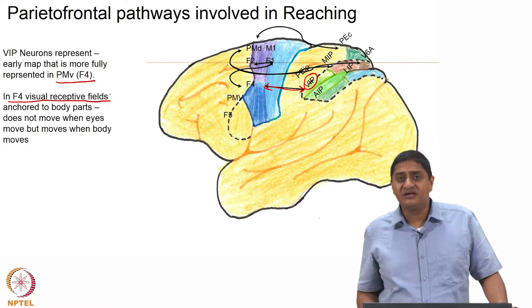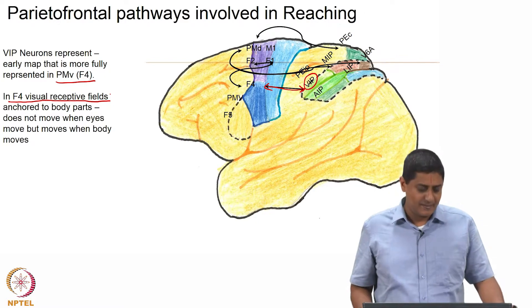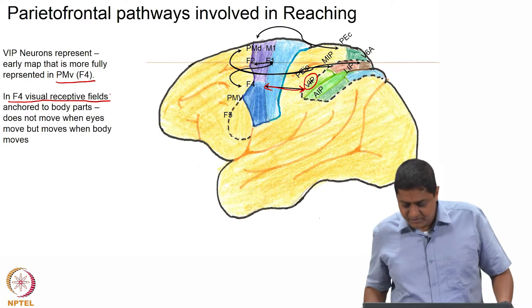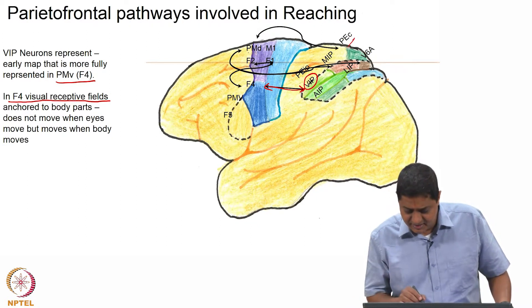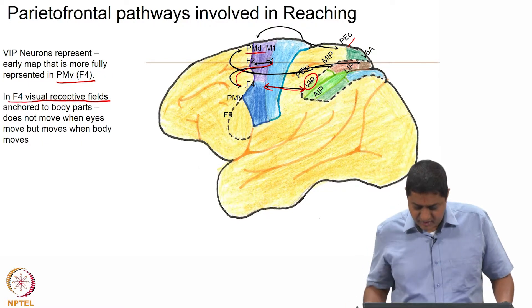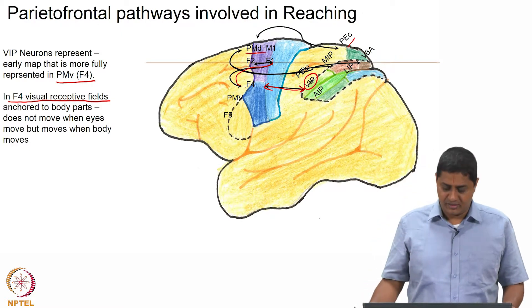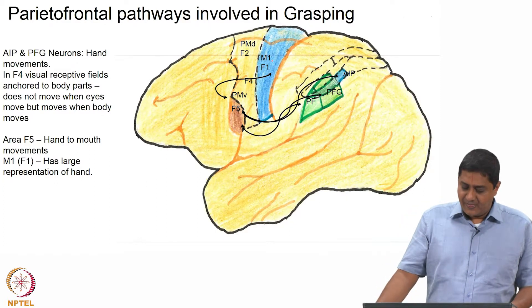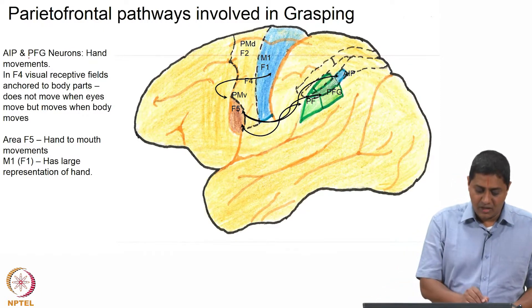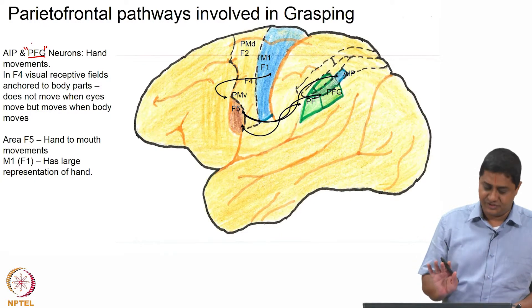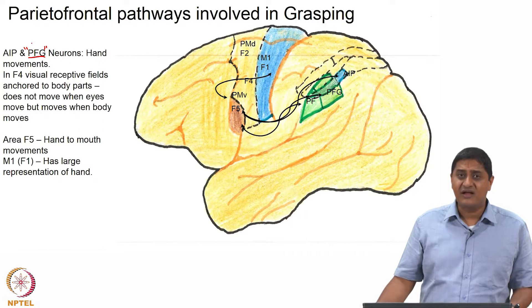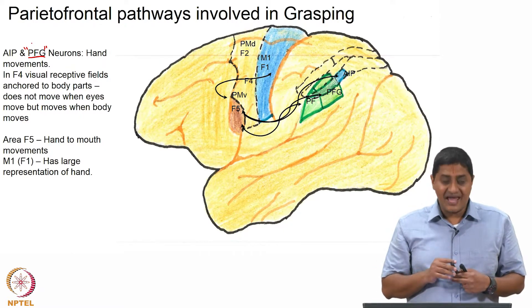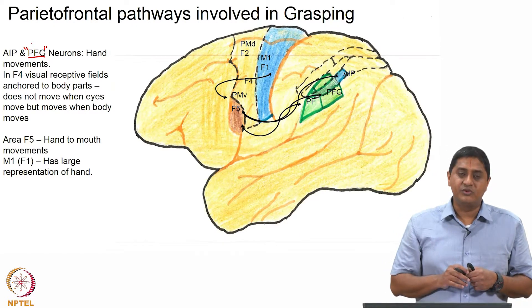These neurons are in the visual receptive field, however they are more active during actions of specific regions of the body. The VIP neurons also have reciprocal connections with other regions such as PEC and the dorsal premotor cortex, and areas F1 and F4 have reciprocal connections — some of these we will discuss in future slides. When it comes to grasping, anterior intraparietal neurons and the PFG neurons are believed to be responsible for hand movements.